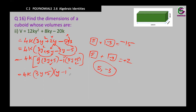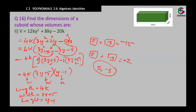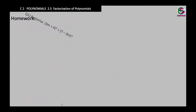We see that 3y plus 5 is common, so we take it outside: (3y plus 5)(y minus 1). So the three dimensions are: length is 4k, width is 3y plus 5, and height is y minus 1. Notice I didn't separate 4 and k because in polynomials we treat k as a constant, so the whole 4k represents one side of the cuboid, while the other two brackets represent the other two sides. Hope everything is clear — keep practicing.